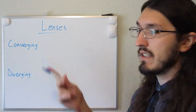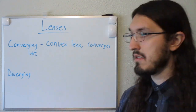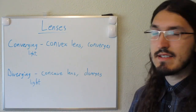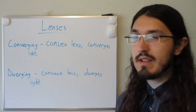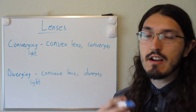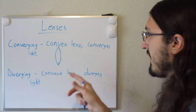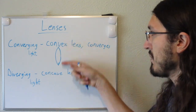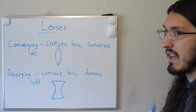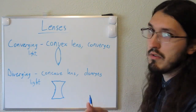Sometimes converging lenses are also called convex lenses and diverging lenses are sometimes called concave lenses. The reason for these other names is because of their shape. Convex lenses have a wide center and a pointy top and bottom. Concave lenses are the opposite shape — they have wider tops and bottoms and a more narrow center.